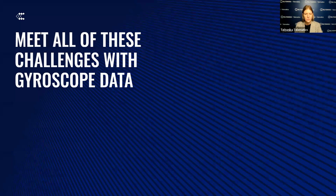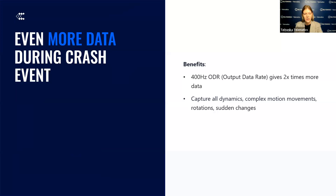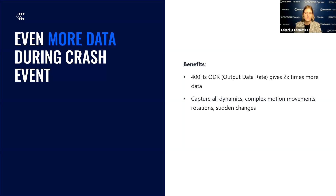Now we will review gyroscope capabilities that can address those challenges and even more. In firmware which supports our devices with gyroscope, the output data rate is increased to 400 Hz, meaning you will get more detailed data about crash events. Devices capture twice as much data as devices with accelerometers, which have an output data rate of 200 Hz. This higher rate allows for more detailed information about how the vehicle is moving, especially during fast or complex crash situations.